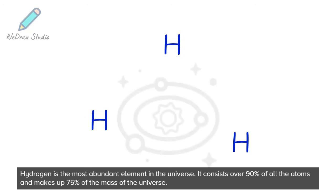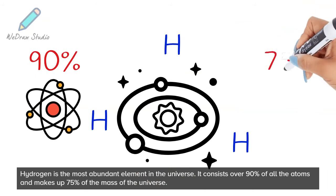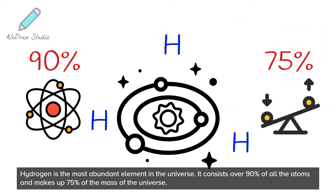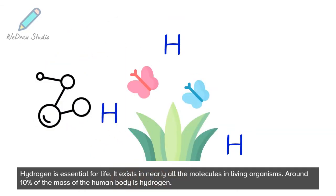Hydrogen is the most abundant element in the universe. It consists of over 90% of all the atoms and makes up 75% of the mass of the universe. Hydrogen is essential for life. It exists in nearly all the molecules in living organisms. Around 10% of the mass of the human body is hydrogen.